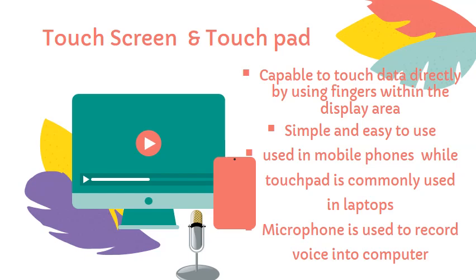Touchscreen allows the user to enter inputs by simply touching the display screen. It records the inputs when a finger comes in contact with the screen. Here your finger acts as the pointing device. Touchscreens are used in mobile phones and ATMs. A touchpad is commonly used in laptops. You can move the cursor on the screen by just moving a finger on the touchpad.